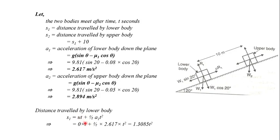But the initial velocity is 0, so this becomes half a1 t squared. Substituting a1, we will get s1 to be 1.3085 t squared.